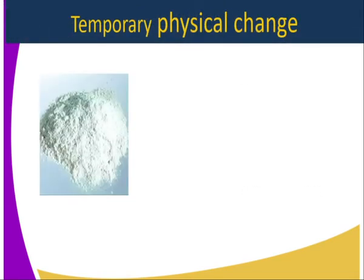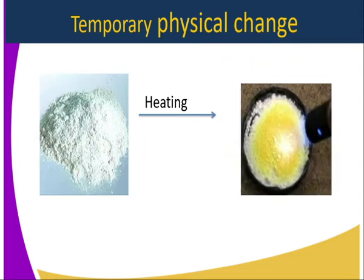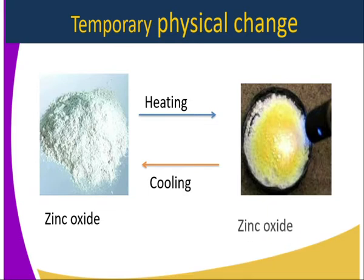When substances are heated, the following may occur. Temporary physical change — for instance, when you heat zinc oxide, it changes color to yellow. On cooling, it goes back to white, without altering the chemical composition of the substance. So zinc oxide once heated gives us zinc oxide which is yellow in color. This is a perfect example of a temporary physical change.